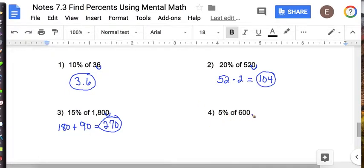Okay, 5% of 600. I first have to do the 10% trick, which gives me 60. And now I have to take half of that, which is 30.